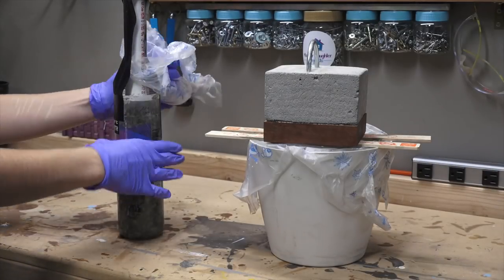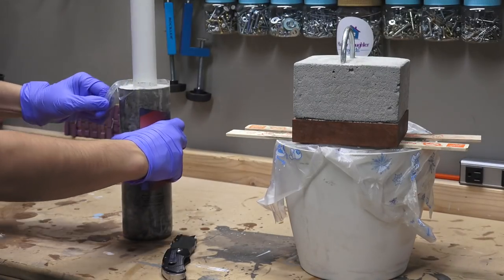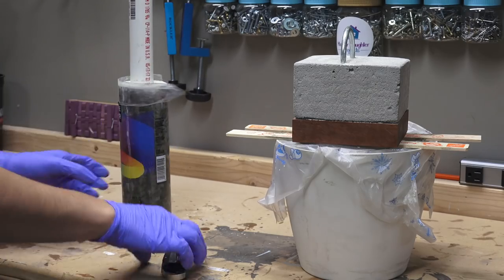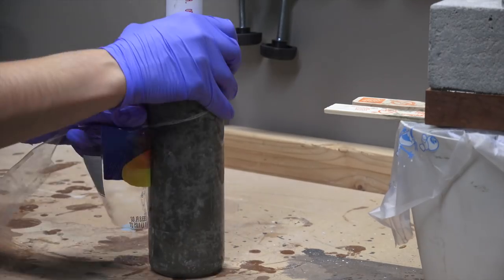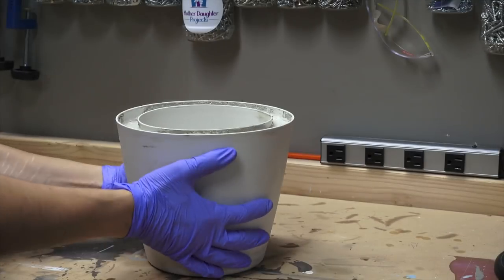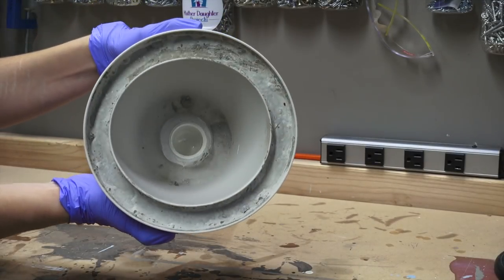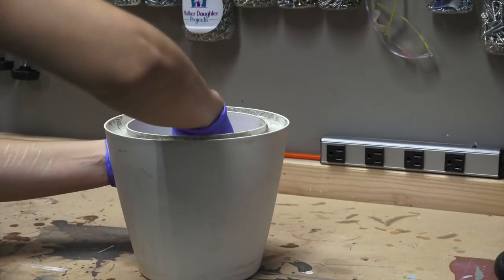24 hours later I removed the molds. Starting with the lamp base I cut the plastic and pulled it off. The mold can be removed after 24 hours but the concrete will not gain its full structural strength for 28 days so keep that in mind when using concrete. The color will also lighten as it cures.